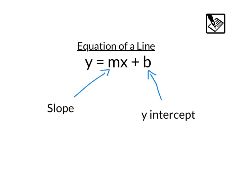You might recall the equation of a line we've been using is the slope intercept form, y equals mx plus b, where the m represents the slope and the b represents the y intercept.